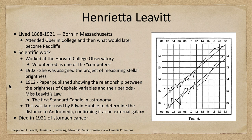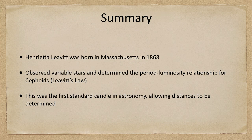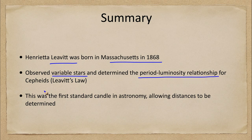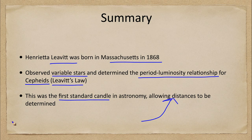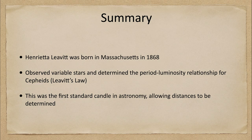In summary, Henrietta Leavitt, born in 1868 in Massachusetts, observed variable stars and determined the period-luminosity relationship for Cepheids, now called Leavitt's Law. This was the first standard candle in astronomy, allowing us to measure distances to the stars — something that was very hard to do before this.